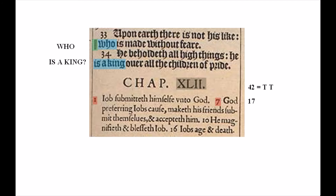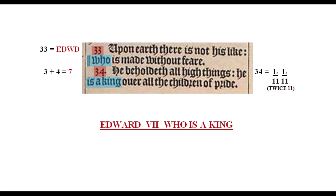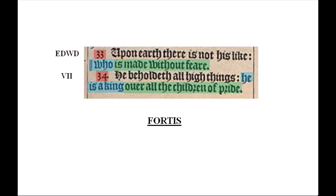I've gone over this in a previous video, but I want to revisit it. At the close of chapter 41 is an acrostic that, when looking at the page, stands out. There's a margin note like a hint, and it reads 'Who is a king?' with line numbers 33 and 34 above each line. With gematria, the abbreviation for Edward — E-D-W-D — equals 33. 34 is equal to L-L with a repeated count, but also L is equal to 11; two L's are 11-11, or twice 11, and 3 plus 4 equals 7. So this is saying Edward VII — who is a king? Read the message after the colon: 'Who is made without fear?' Without fear is brave, or valiant, which in Latin is 'fortis.' The same with: 'He is a king over all the children of pride' — and in Latin a synonym for proud is 'animosus,' meaning courage. So it's saying he's a king over all the children of fortis.